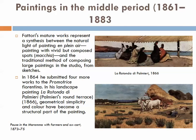If you look at La Rotonda from 1866, he is managing to create movement by using quite blobby colours — just blobs of colour that are in a sense quite shapeless, but he still manages to create movement. There is also a geometrical simplicity and colour that has really worked its way into this painting. At the bottom we have The Pass at the Maremma with Farmers and an Ox Cart from 1873 to 1875. This painting is equally simple in format and subject matter but holds a bit more detailing, though La Rotonda carries more movement and shift.